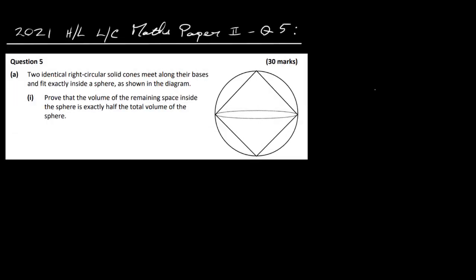Okay, so in this video I'm going to have a look at the 2021 High-Level Leaving Cert Maths paper 2, question 5. Two identical right circular solid cones meet along their bases and fit exactly inside a sphere as shown in the diagram. Prove that the volume of the remaining space inside the sphere is exactly half the volume of the sphere.